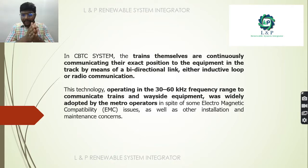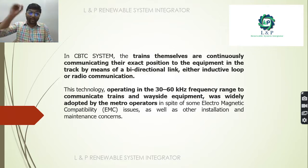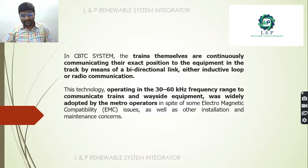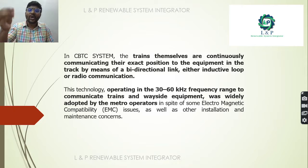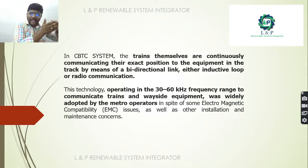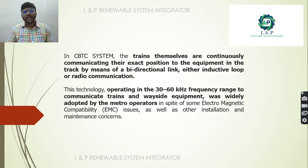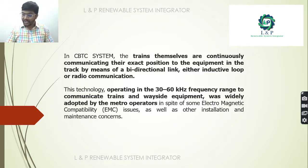In the CBTC system, trains continuously communicate their exact position to track equipment via a bidirectional link — for example, radio communications. The frequency range often used is 30 to 60 kilohertz. This is mostly adopted in metro stations to avoid electromagnetic compatibility issues.